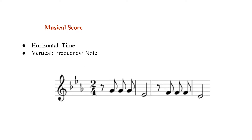This is an example of a musical score, which is going to be our example for this video. The horizontal line in the musical score represents the time, so each note is displayed at a particular time in the musical score. And the vertical lines represent the frequency or the note.